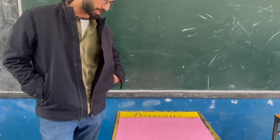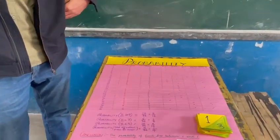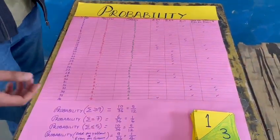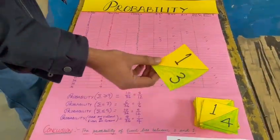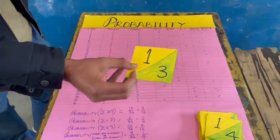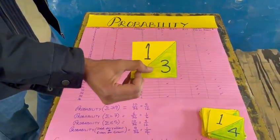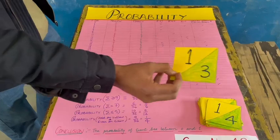In this activity we are simulating double dice throw. We have taken square cutouts. In this cutout, one portion tells us about the outcome of one dice and the other portion tells us about the outcome for the second dice.